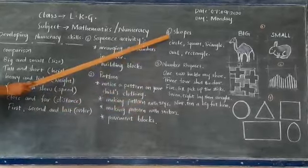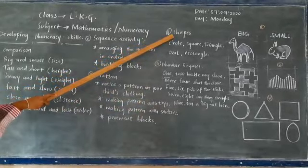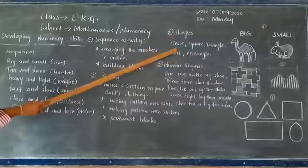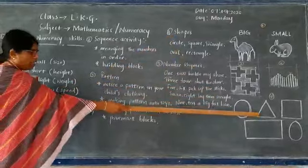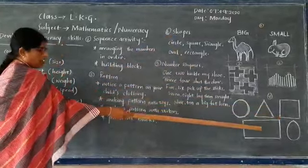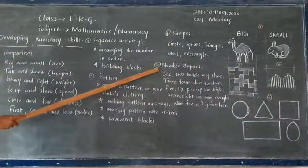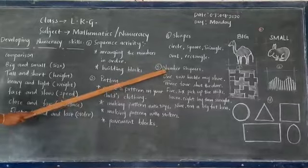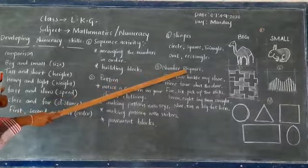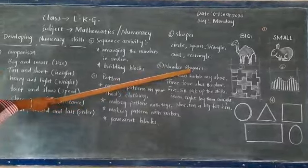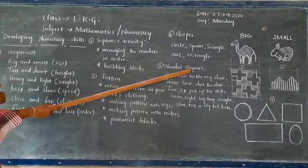The fourth segment is making the child familiar with different shapes like circle, triangle, square, rectangle and oval shapes. And fifth and very most important segment, that is teaching them the number rhymes where the children will enjoy. And learning will be fun for them.